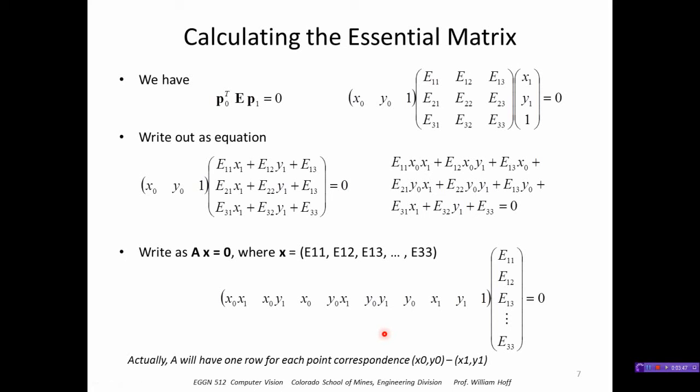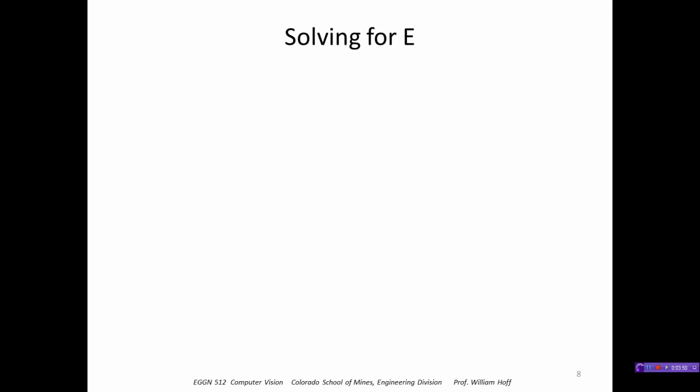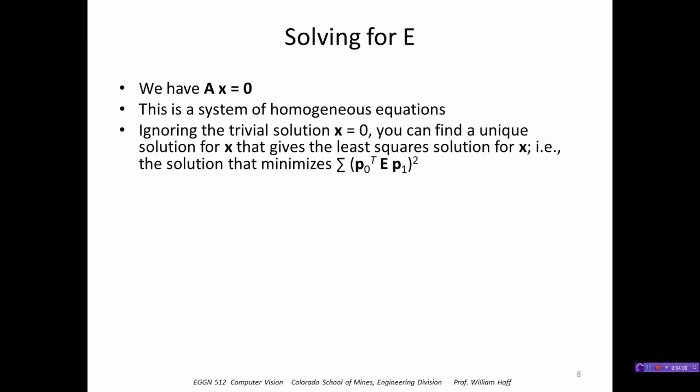I'll have at least eight rows of this matrix A. Now I want to solve the matrix equation Ax equals zero. As we've seen before, this is a system of homogeneous equations, so the solution is only known up to a scale for x. We're going to find the solution that minimizes the residuals of that equation.